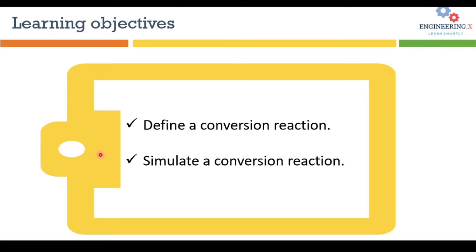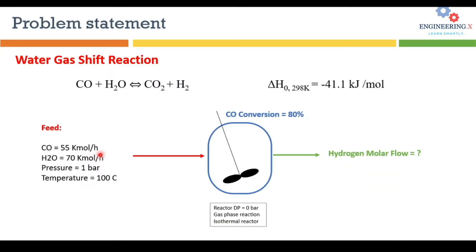Today we are going to learn these two important concepts by solving a problem. We are solving the water-gas shift reaction, which is a very famous reaction for production of hydrogen. The heat of reaction is minus 41.1 kJ/mol. The feed is a mixture of carbon monoxide and steam entering the reactor at 55 kmol/hr CO and 70 kmol/hr water.